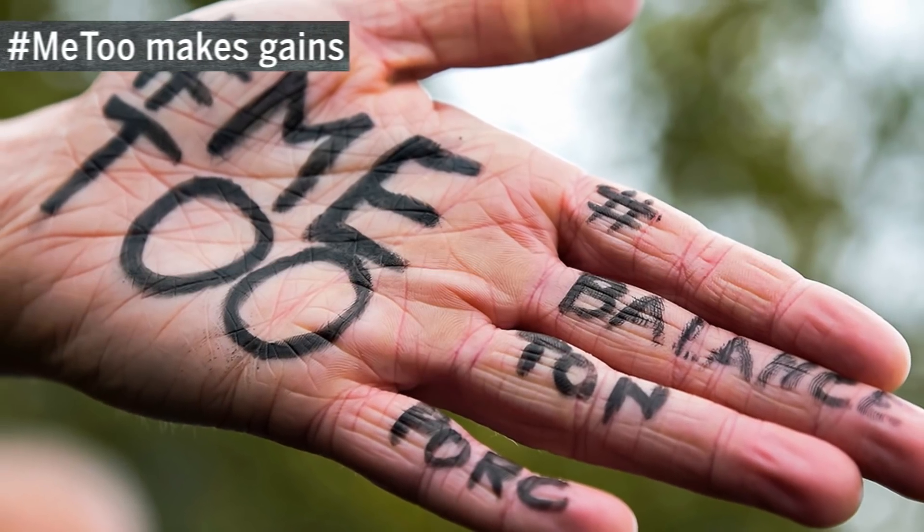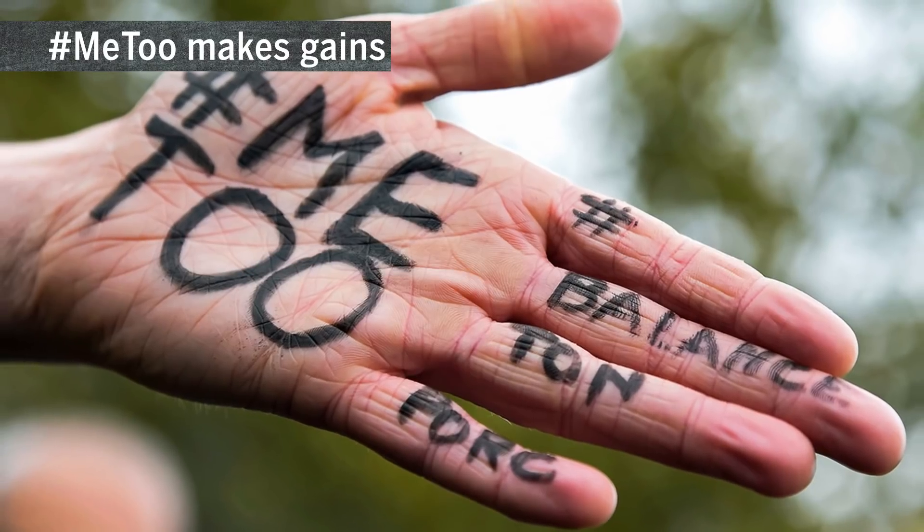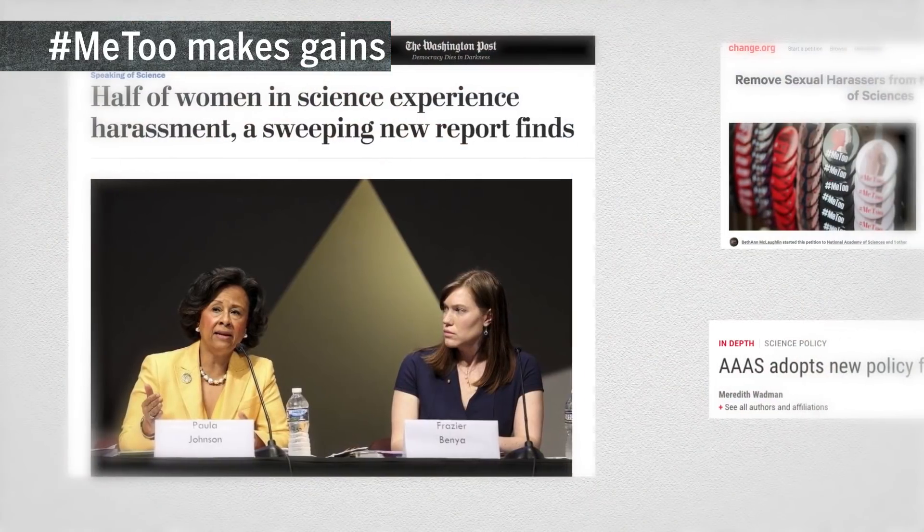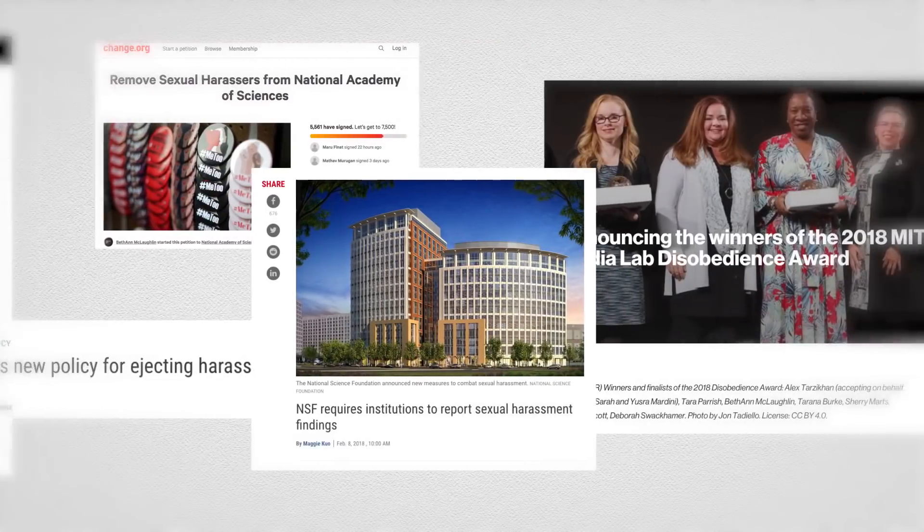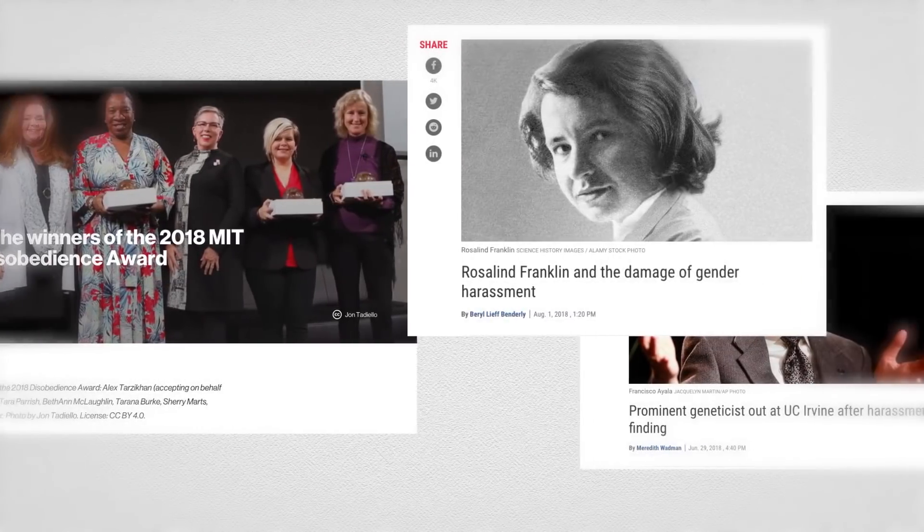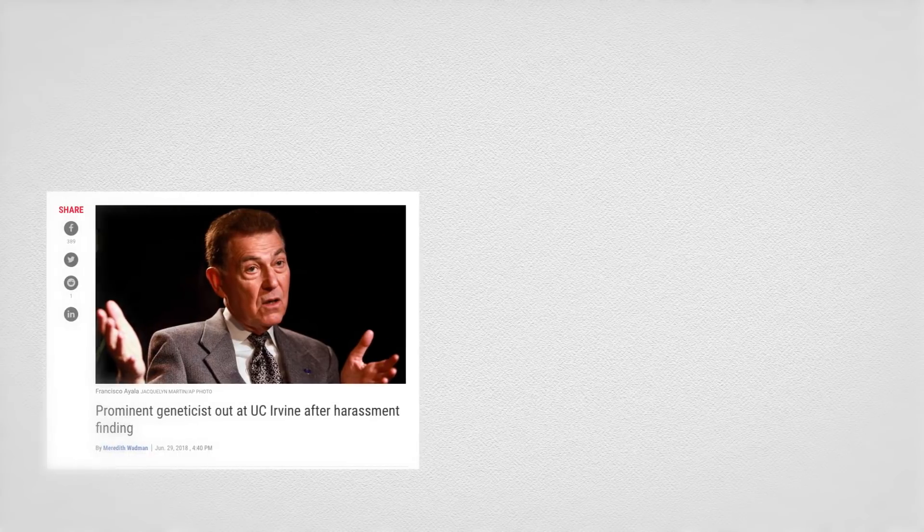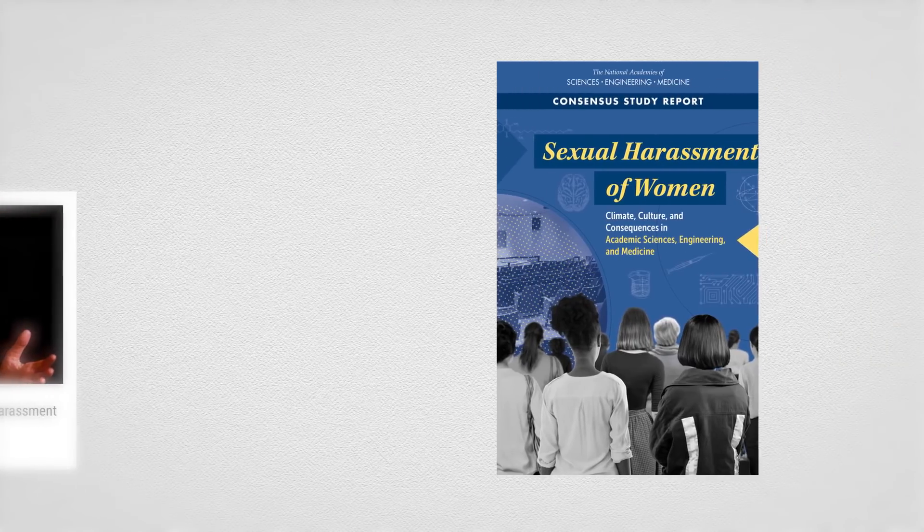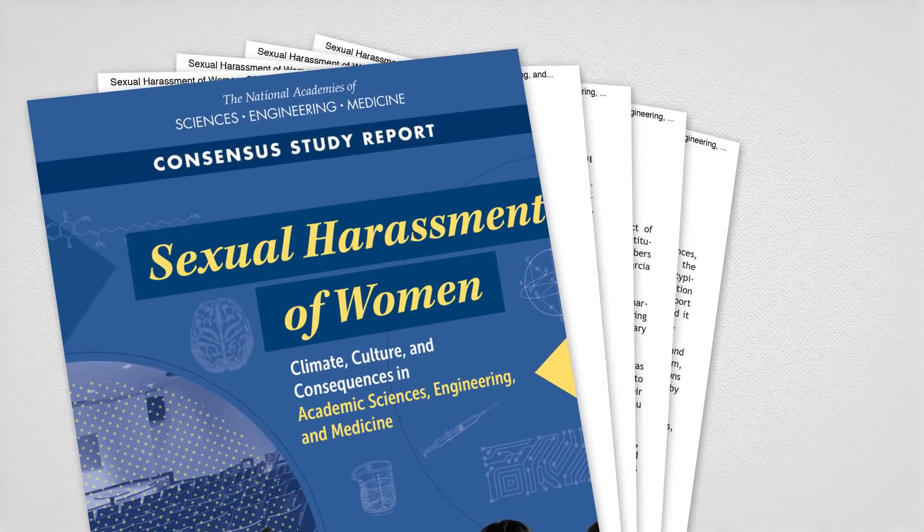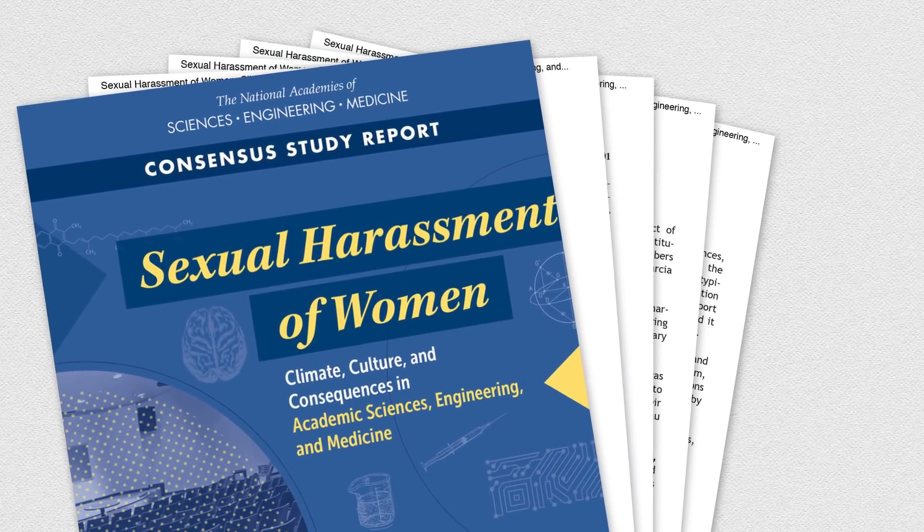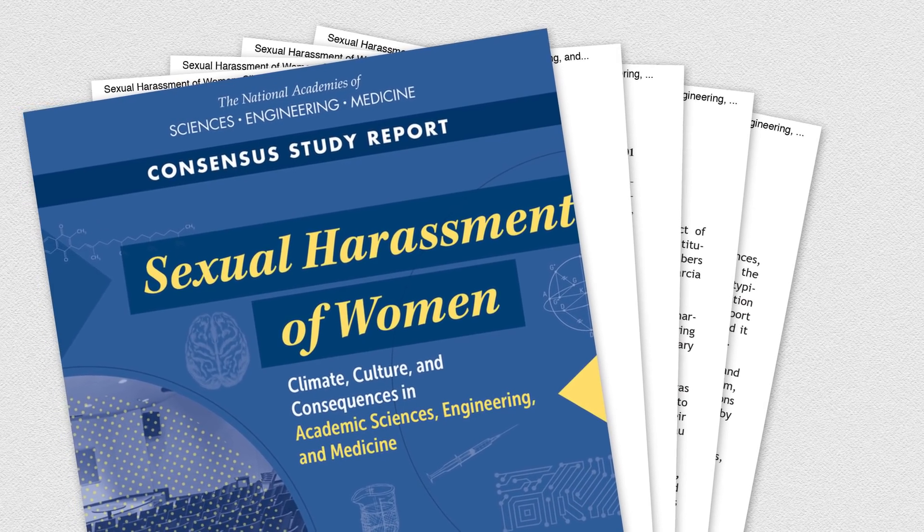Until recently, sexual harassment in science has been underreported and largely ignored. But 2018 brought signs of change. Several institutions upheld allegations against prominent scientists accused of sexual harassment, discrimination, and bullying. And the U.S. National Academies of Science issued a report calling for systemic changes to prevent such abuse.